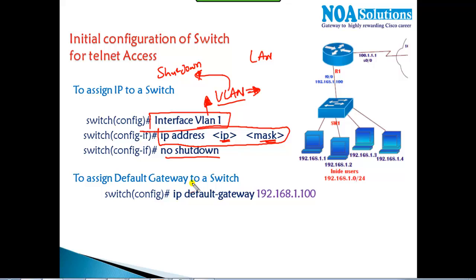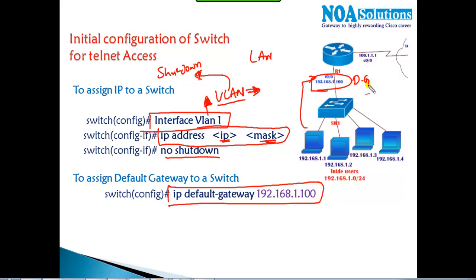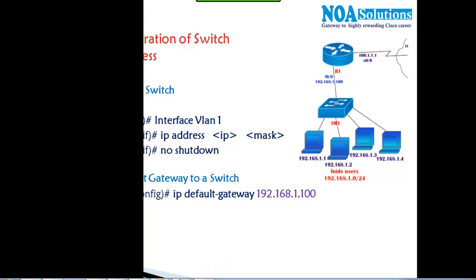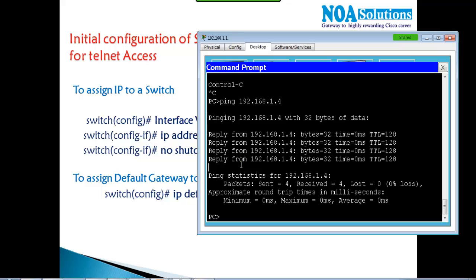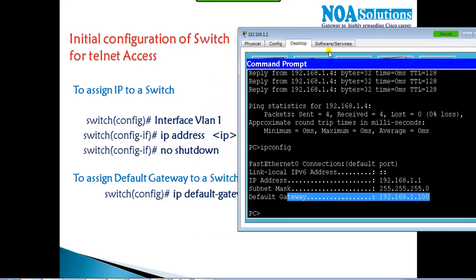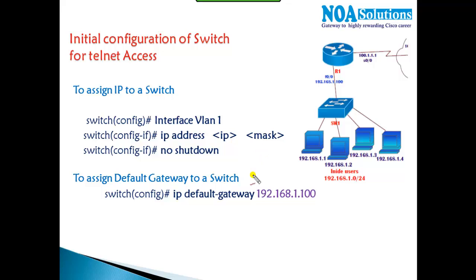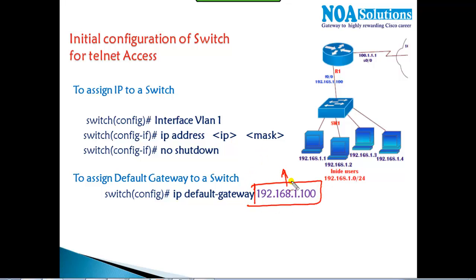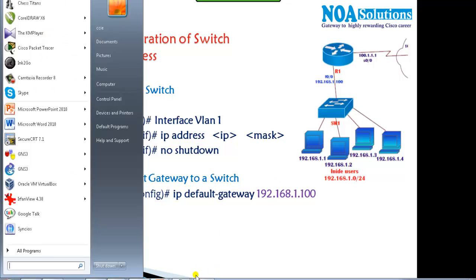We can also assign a default gateway using the 'ip default-gateway' command. This tells the switch who its router is, similar to configuring the default gateway on a PC. On PCs it's configured in a separate tab, but on switches we use this command. This allows the switch to be accessed remotely from other networks.